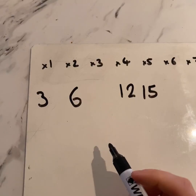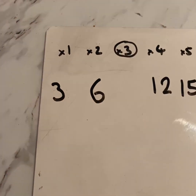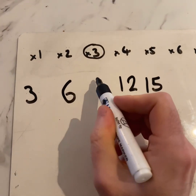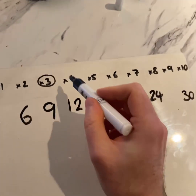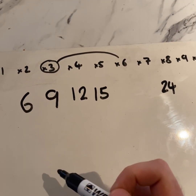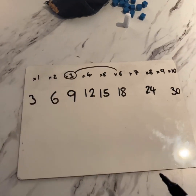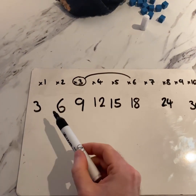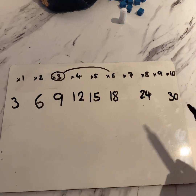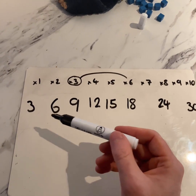Can you triple three? That means three add three add three — three add three add three is nine. Can you double nine? Nine add nine is eighteen — you might know it from your two times table: two times nine is eighteen. So we can count: three, six, nine, twelve, fifteen, eighteen, twenty-four, thirty. Let's go back: thirty, twenty-four, eighteen, fifteen, twelve, nine, six, three.